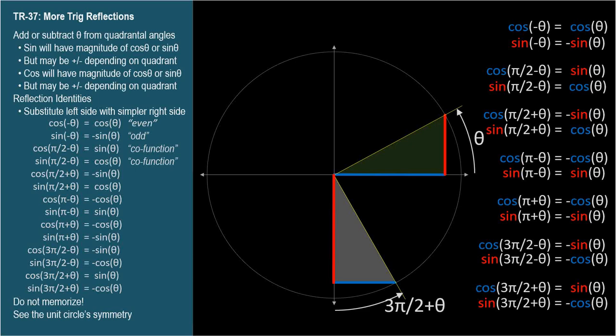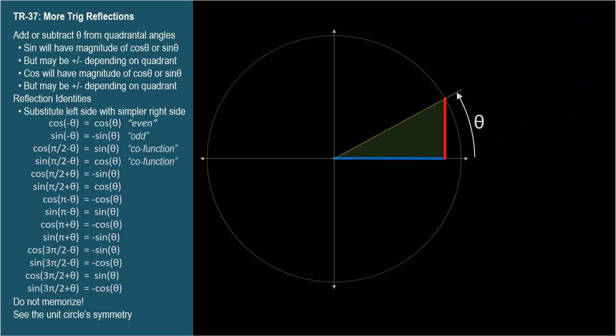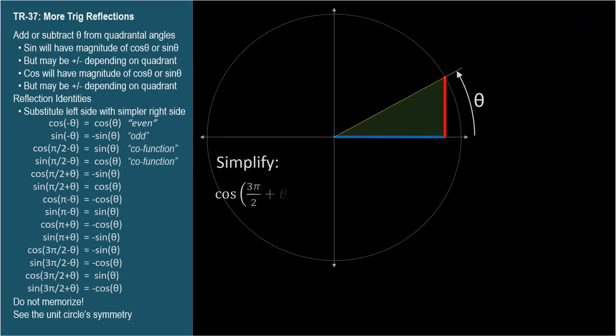As I've already said, the whole point of this topic is that when we see compound arguments like these for a trig function, we can replace them with trig functions having just theta as the argument. Then we can use all of our other tools and techniques to simplify or prove identities. Let's do an example: simplify cosine of (3 pi over 2 plus theta) times sine of (pi minus theta) minus sine of (3 pi over 2 minus theta) times sine of (pi over 2 plus theta).